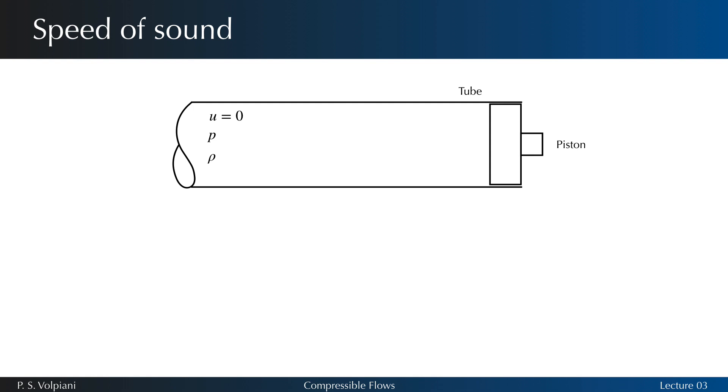The fluid is initially at rest and has density rho, pressure p, and temperature t. At a certain instant, the piston is given an incremental velocity du to the left. The fluid particles immediately next to the piston are compressed a very small amount as they acquire the velocity of the disturbance. As the piston and these compressed particles continue to move, the next group of fluid particles is compressed and the wave front is observed to propagate through the fluid at the characteristic sonic speed of magnitude a.